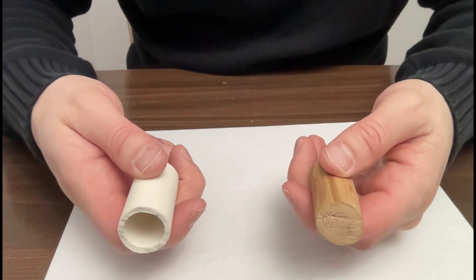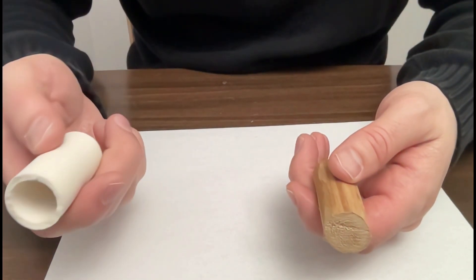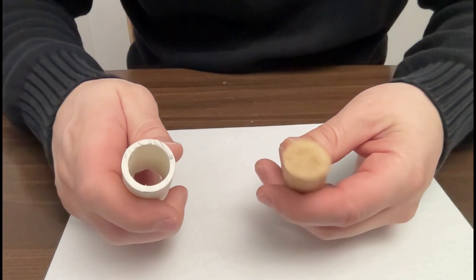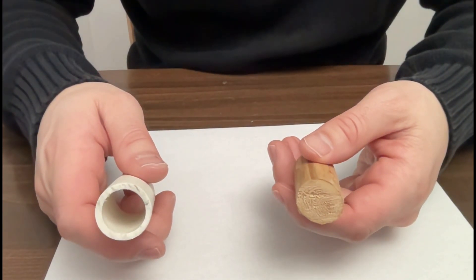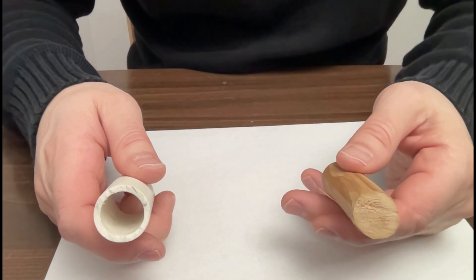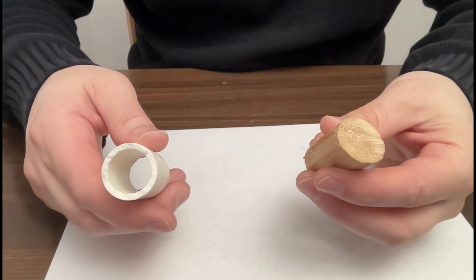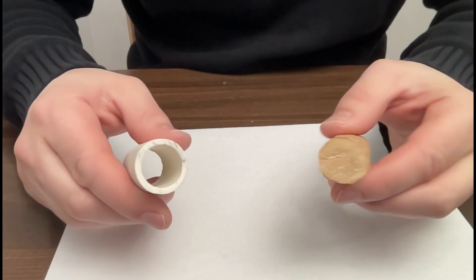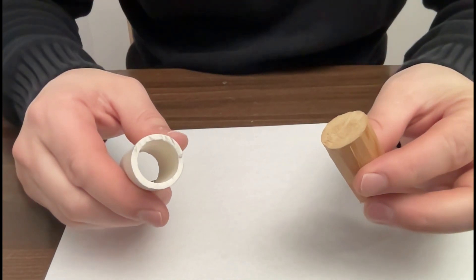Here I have two cylinders. On the left side is a PVC pipe which is rigorously manufactured to be approximately perfectly cylindrical. On the right side I have a tree branch that I cut into a cylinder-like shape. What we're going to try to do is measure the diameter and the circumferences of these cylinders.